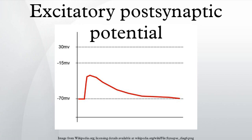The flow of ions that causes an EPSP is an excitatory postsynaptic current. EPSPs, like IPSPs, are graded. When multiple EPSPs occur on a single patch of postsynaptic membrane, their combined effect is the sum of the individual EPSPs. Larger EPSPs result in greater membrane depolarization and thus increase the likelihood that the postsynaptic cell reaches the threshold for firing an action potential.